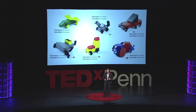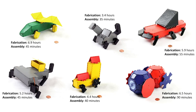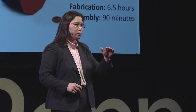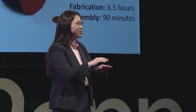These numbers for fabrication are a little bit misleading. If you wanted to 3D print the 3D shape of any one of these robots, it would actually take you probably somewhere between 20 to 40 hours on an existing commercial machine. That's because when 3D printers print out parts, they go layer by layer by layer.